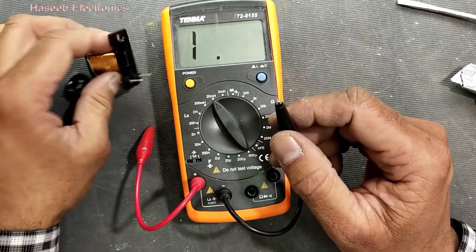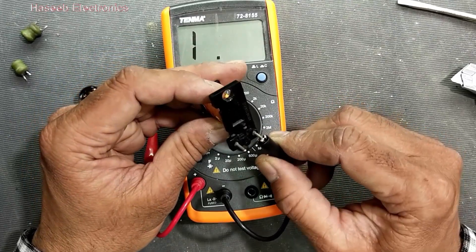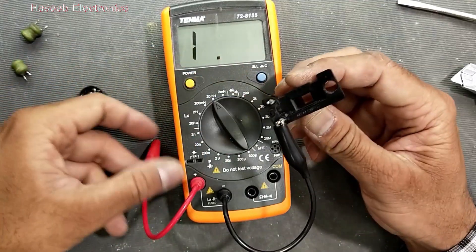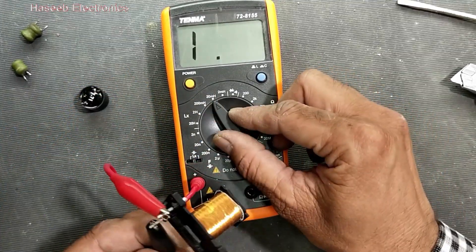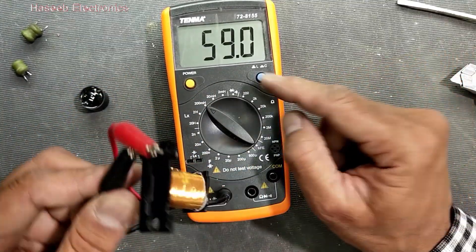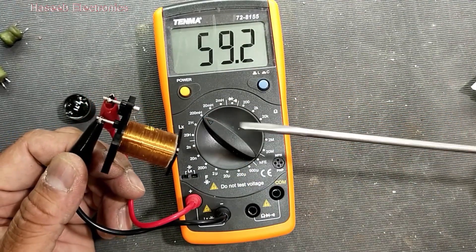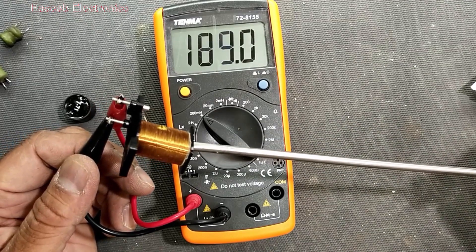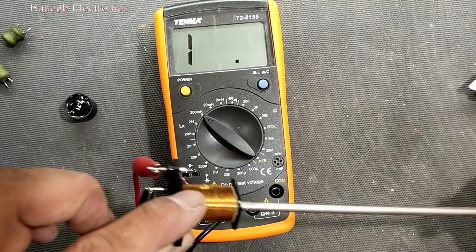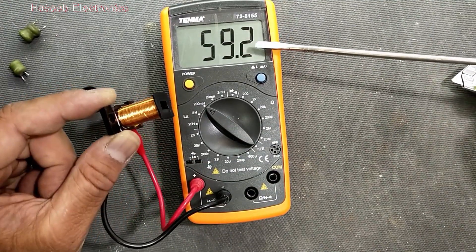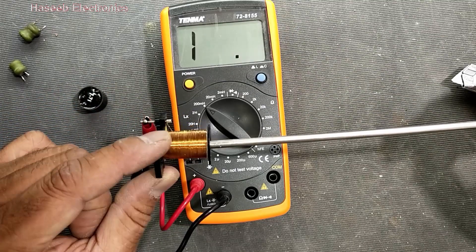Now we will check this coil which has no core and we will see the response of the core, how the ferrite core works with coil. It is giving over range. Here it is 59 millihenry. Now I will insert a screwdriver as a core.